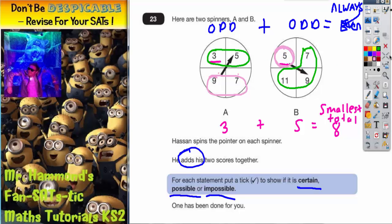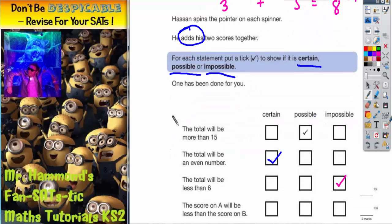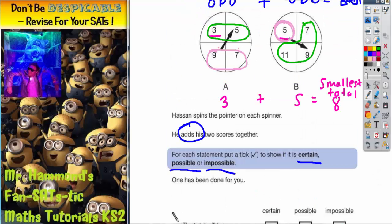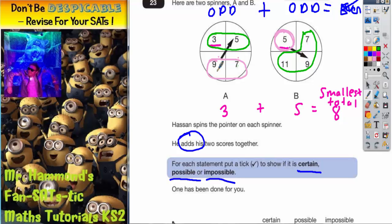So for that final statement, we need to tick that it is just possible. The score on A can be less than the score on B, but it is not certain because there's the exception. B can also be less than A. 5 is less than 7 or 9.